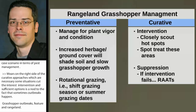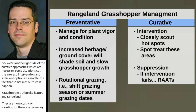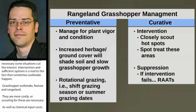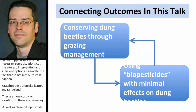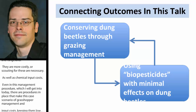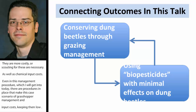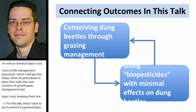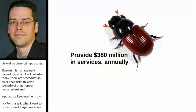Even in this management procedure for grasshopper management, there are procedures in place to keep management and input costs low. For this talk, I want to connect two general ideas: first, the conservation of dung beetles through grazing management — more of a preventative approach — and then using biopesticides with minimal effects, presumably on dung beetles.